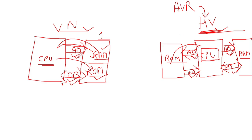One more distinction: in von Neumann architecture, all addresses are unique — RAM and ROM have different addresses. But in Harvard architecture, both ROM and RAM can have the same address. Now let's talk specifically about the Harvard architecture deployed in the AVR microcontroller.